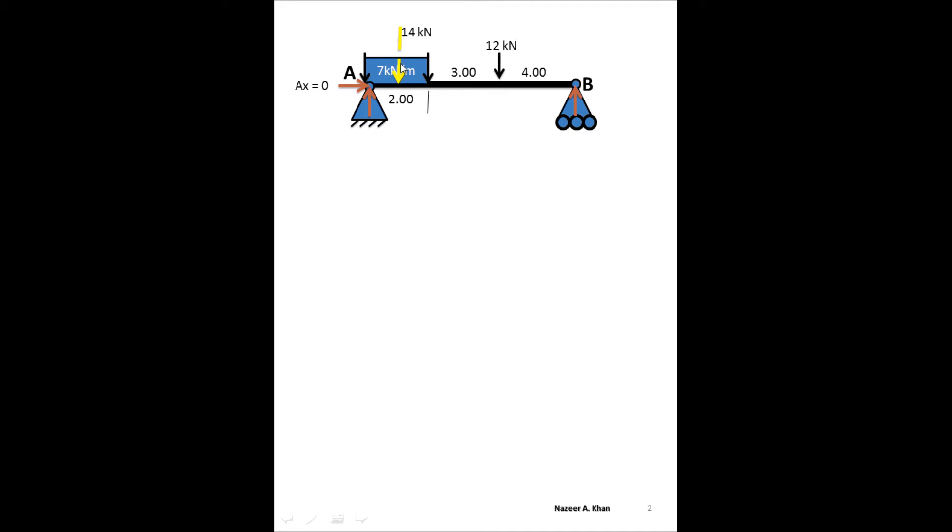I have placed on the simple beam a point load representing the UDL or uniformly distributed load. We know that every meter that we go over, every meter is going to be seven kilonewtons. So we have two meters here. Seven times two is 14. I'm going to put it through the centroid of that particular UDL. It will help me with my calculation. It is not part of the FBD, it just helped me with my calculation.